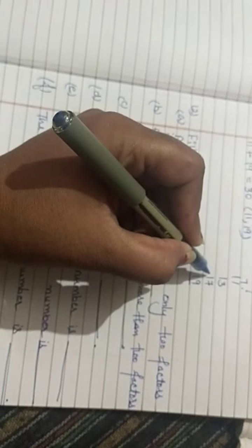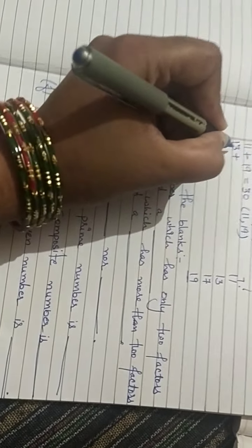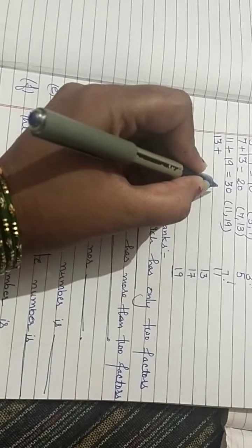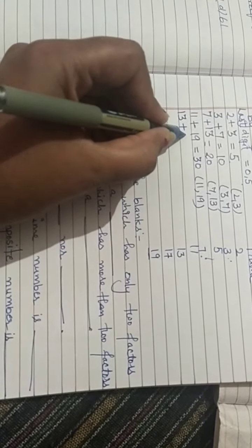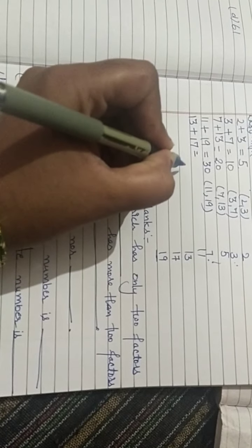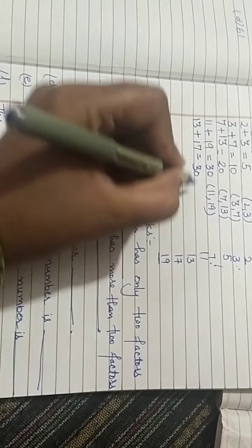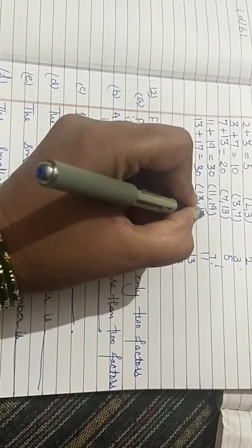Next is 17. 17 plus which number we add, we get the last digit 0 or 5? That is 13. When we add, we get 30. It means the pair is 13 and 17.